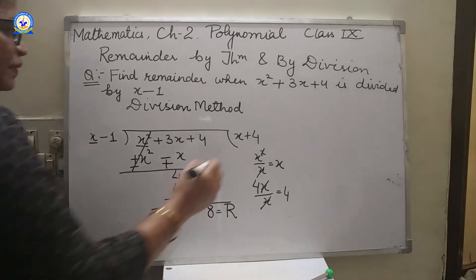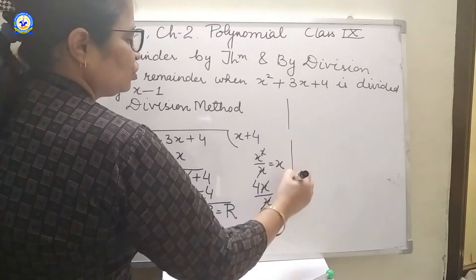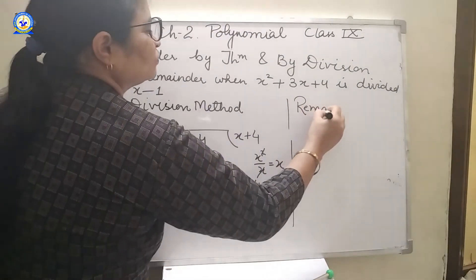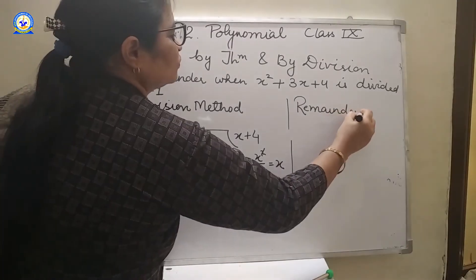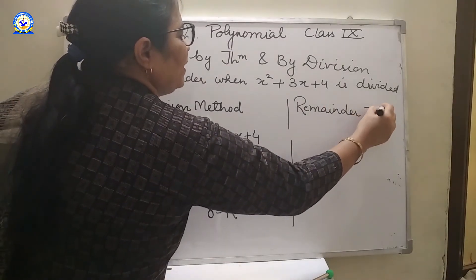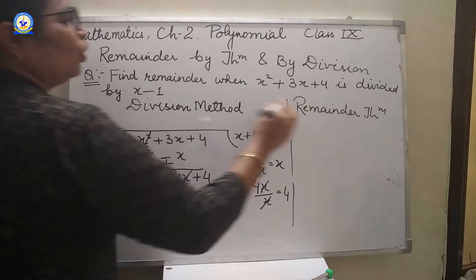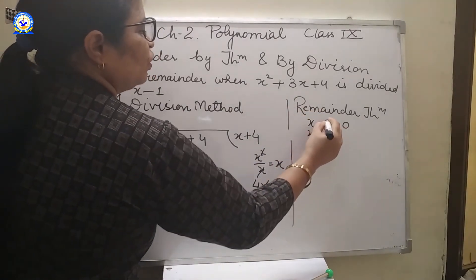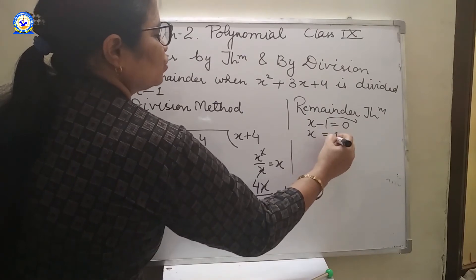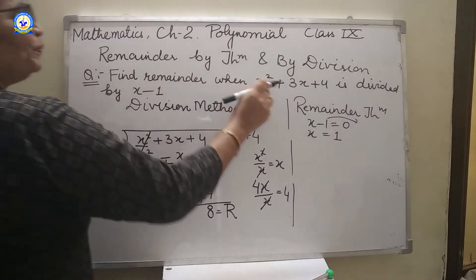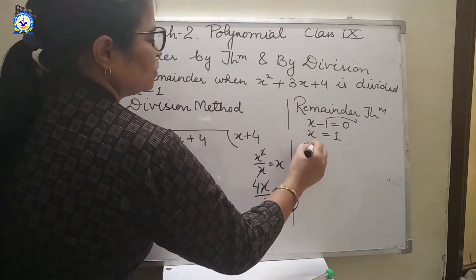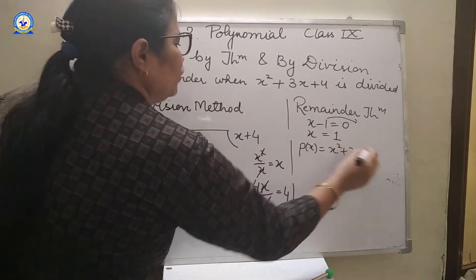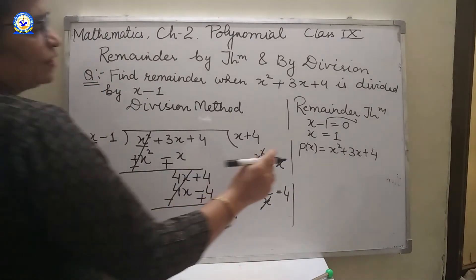Now let's see it by remainder theorem. By remainder theorem, what we will do, we will put x minus 1 equal to 0. So 1 will go over here. So x equal to 1. Now we have Px equal to this.